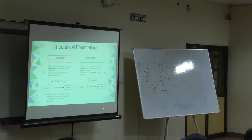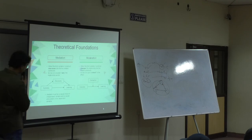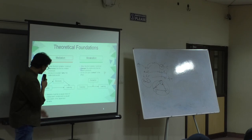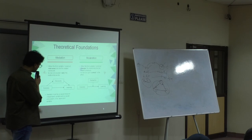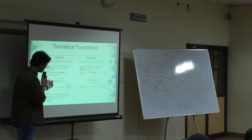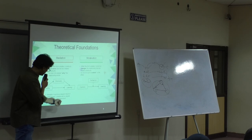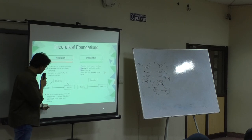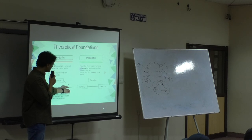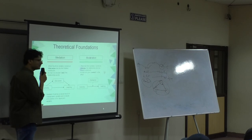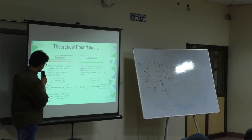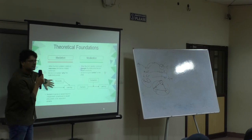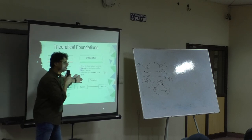A mediator must be a causal result of the independent variable and a causal antecedent of the dependent variable. The independent variable here is curiosity, and discovery is its causal result. Antecedent means 'before' — so discovery is a causal antecedent of the dependent variable, learning. That's all it means. The mediator should be correlated; if there is no relation, that is moderation.